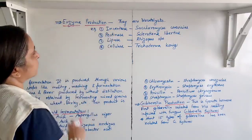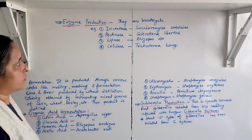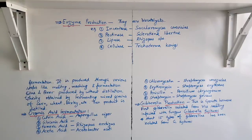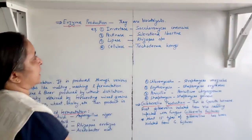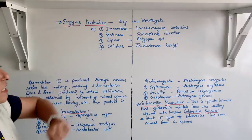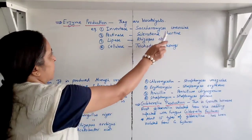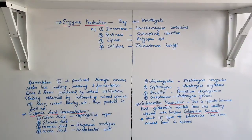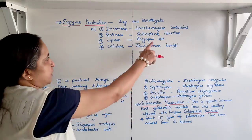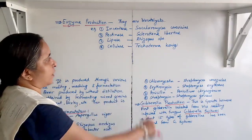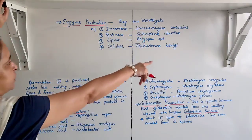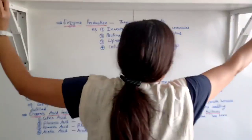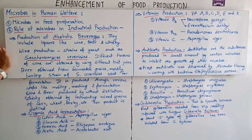Next is enzyme production. Enzymes are biocatalysts. Examples of microbially produced enzymes are: invertase enzyme from Saccharomyces cerevisiae; pectinase enzyme from Sclerotinia libertiana; lipase enzyme from Rhizopus species; and cellulase enzyme from Trichoderma koningii.